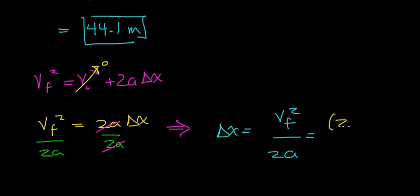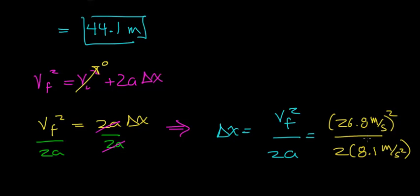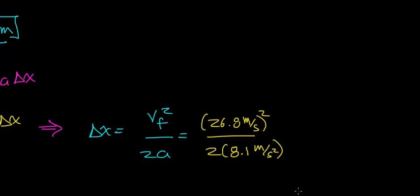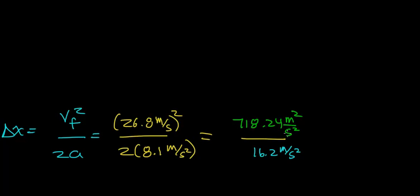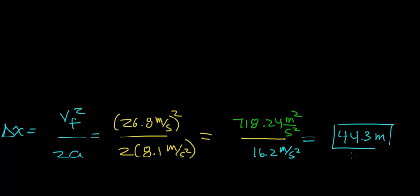Plugging in: the final velocity was 26.8 meters per second, squared, divided by 2 times the acceleration of 8.1 m/s². Squaring 26.8 m/s gives 718.24 m²/s², and 2 × 8.1 = 16.2 m/s². Dividing gives 44.3 meters. Notice this is about 0.2 off from the first method — that's due to significant figures in the calculations. The important lesson is that either method yields the same result.